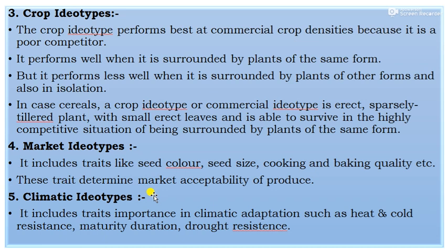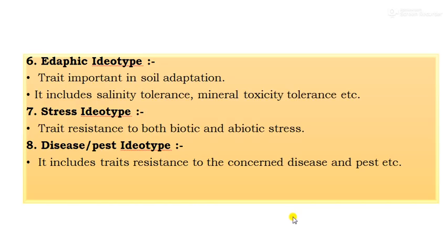The fifth type is climatic ideotype. It includes important traits for climatic adaptation such as heat and cold resistance, maturity duration, and drought resistance. The sixth type is edaphic ideotype. Its important traits relate to the adaptation of a particular cultivar to different soils. It includes salinity tolerance and mineral toxicity or acid tolerance.